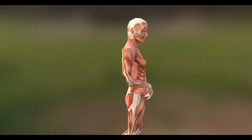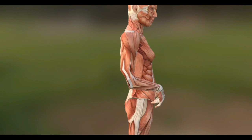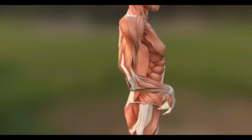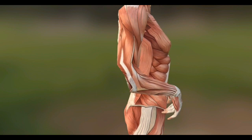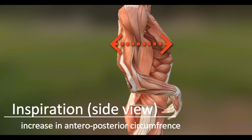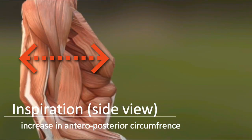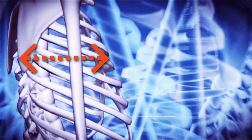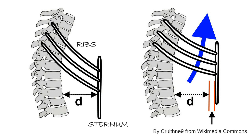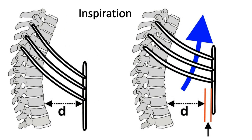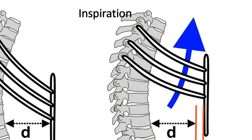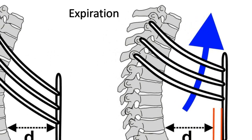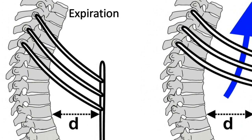If we study inspiration from sideways, there is an increase in the antero-posterior diameter of the thoracic cage. These changes occur due to elevation of the ribs and elevation of the sternum. During expiration, they again lower down.